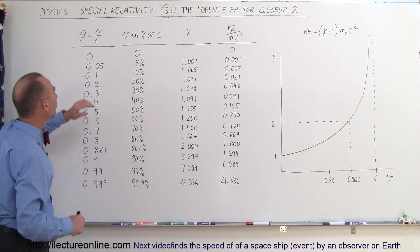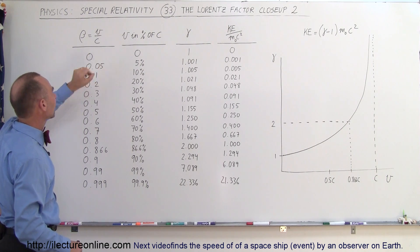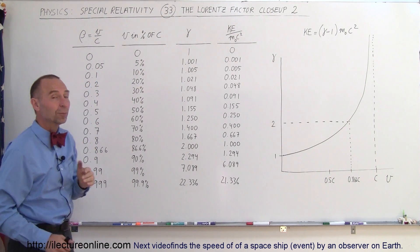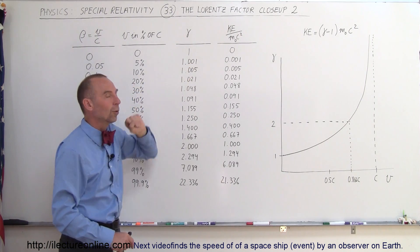But what if the speed becomes significant, such as 0.05 as a fraction of the speed of light, in other words, 5% of the speed of light? Now you can see that the Lorentz Factor becomes 1.001.